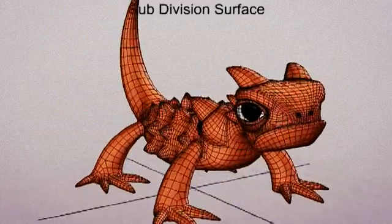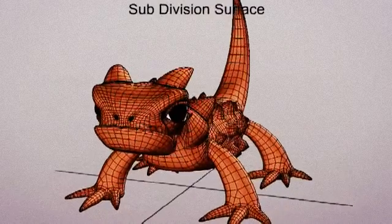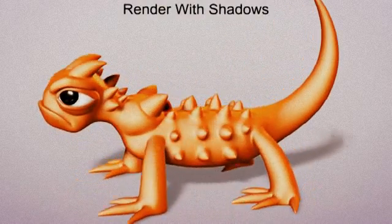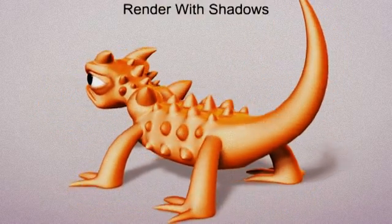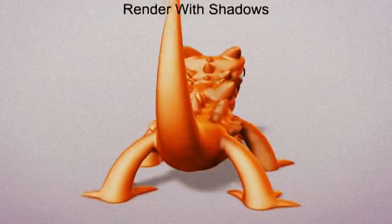Once our final mesh is complete, a subdivision smooth is added to round off the model. And here is the completed model, with rendering and shadows. In the next one...